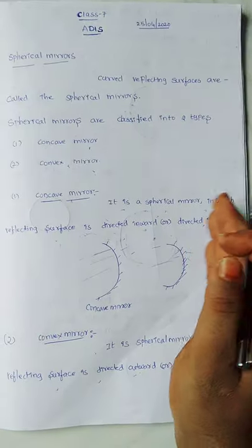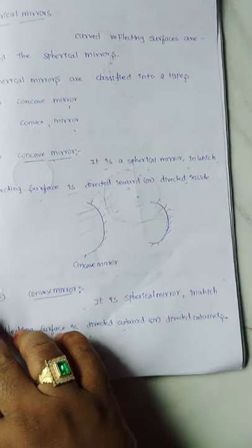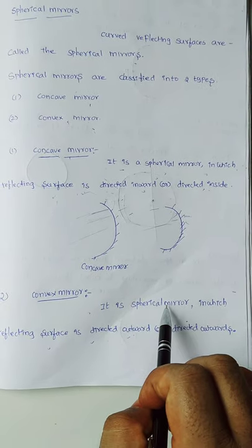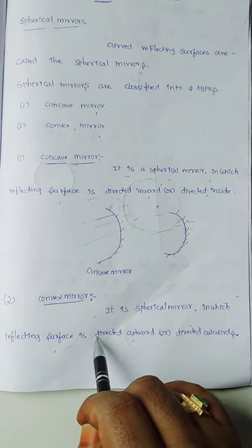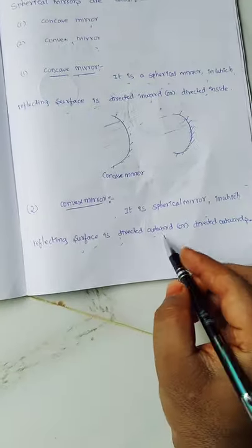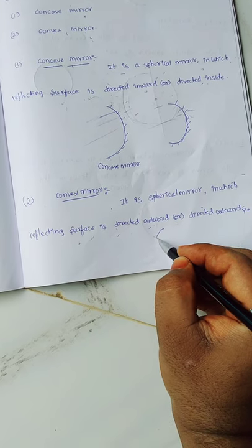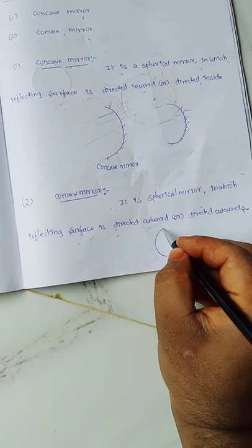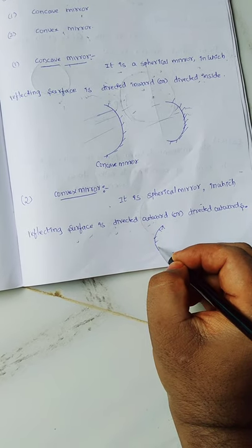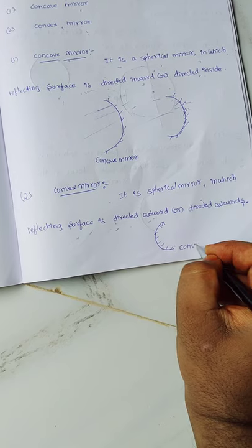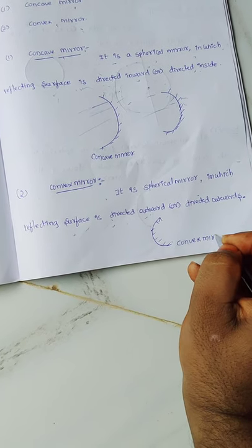Next one is convex mirror. It is also one of the spherical mirrors in which the reflecting surface is directed outward or directed outside. For example, if you take a curved reflecting surface, the inside surface is the silver-coated surface — so it is a convex mirror.